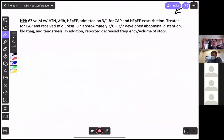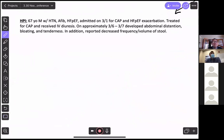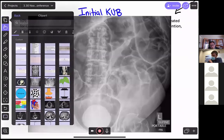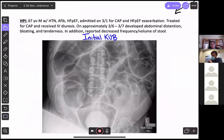All right. So you have got a 67-year-old man with hypertension, AFib, and HFPEF admitted on 3-1 for CAP and HFPEF exacerbation. He was treated for CAP, received IV diuresis, and on 3-6 to 3-7, he developed abdominal distension, bloating, and tenderness. And then he also said that he had sort of a decreased frequency and volume of stool. His vitals were stable at this time, and he had mild abdominal tenderness. Being the excellent interns and residents that you guys are, you went ahead and ordered a KUB.